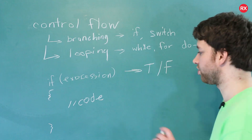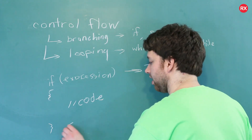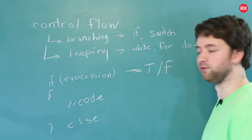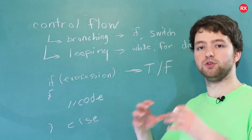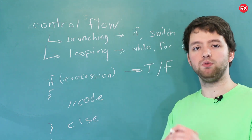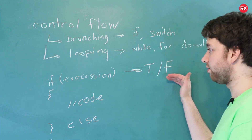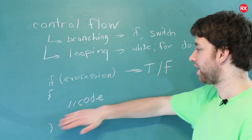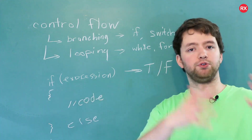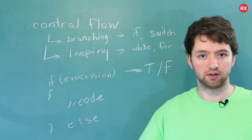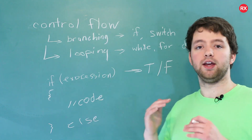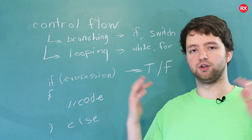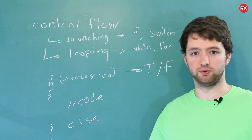There's also a variation with an else. So you could say else and put some more curly braces. The else gives it a section of code that will evaluate if it's false. So you basically have two options: you can do it without the else — if it's true it'll do something, if it's false it'll do nothing. Or you can use if-else — if it's true it'll do something, if it's false it'll do something else. It's totally up to you whichever one you want to use.